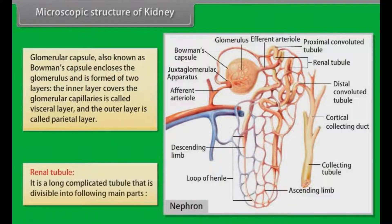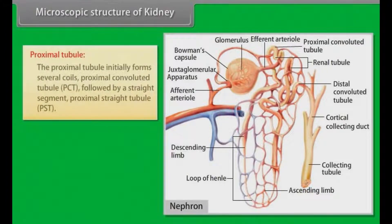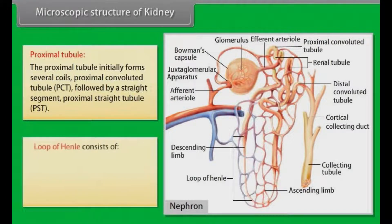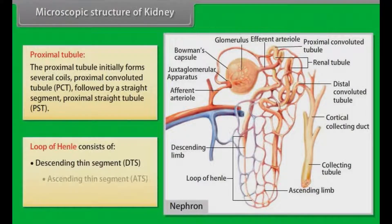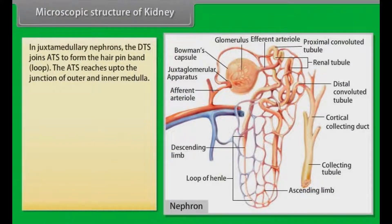Renal tubule. It is a long, complicated tubule divisible into the following main parts. The proximal tubule initially forms several coils — the proximal convoluted tubule (PCT) — followed by a straight segment called the proximal straight tubule (PST). The loop of Henle consists of a descending thin segment, an ascending thin segment, and a thick ascending limb. In juxtamedullary nephrons, the descending thin segment joins the ascending thin segment to form the hairpin bend.